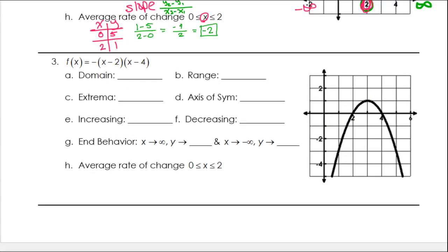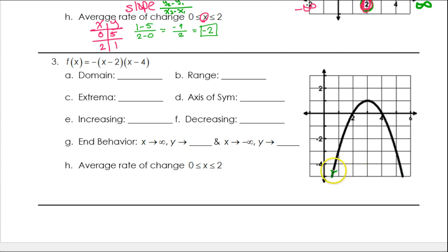Number 3. We have our equation. So the domain — again, domain is the x values. How far to the left does it go? How far to the right does it go? Well, it goes to the left forever and to the right forever. So once again, the domain will be negative infinity to positive infinity.